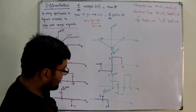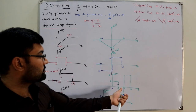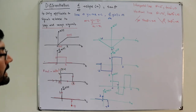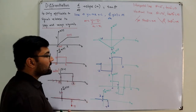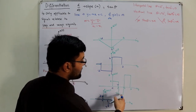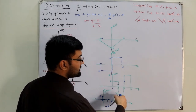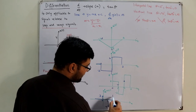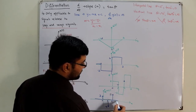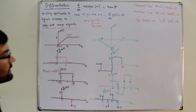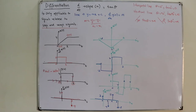Continuing: from 1 to 2 it's constant, derivative = 0. At t=2 it jumps from -3 to 8: final minus initial = 8 - (-3) = 11, so an impulse of area 11. From 2 to 3 the derivative is 0. At t=3 it jumps from 8 to 0: final minus initial = 0 - 8 = -8, so an impulse of area -8. This is how you calculate the derivative of such a piecewise constant function.